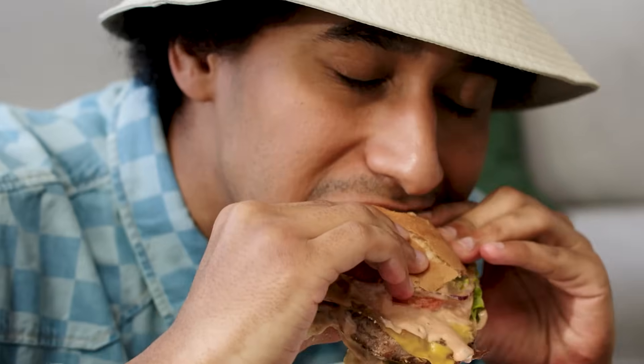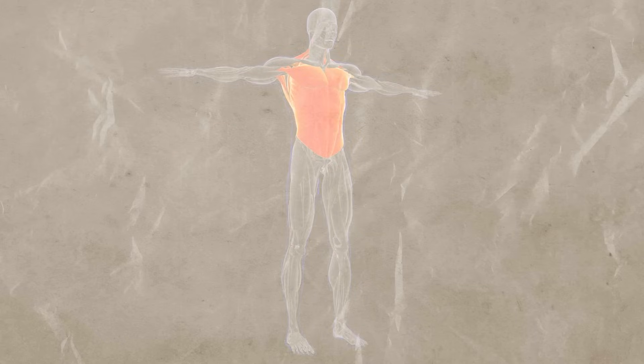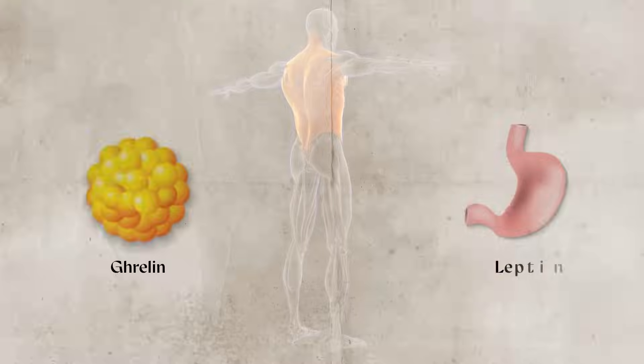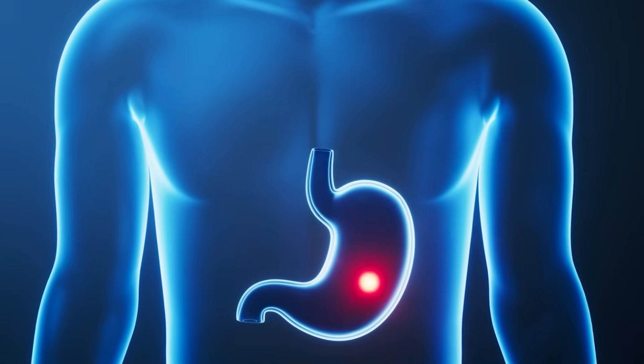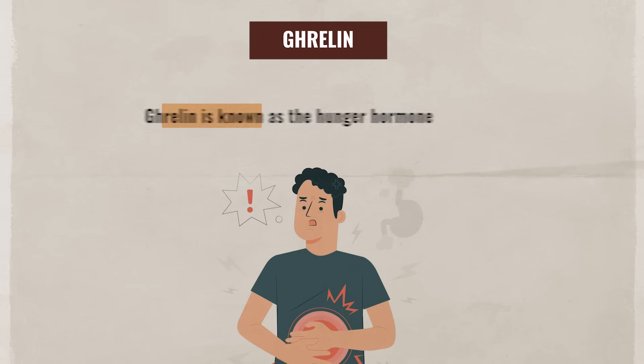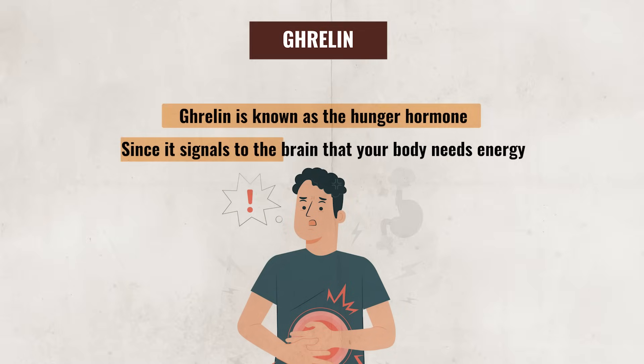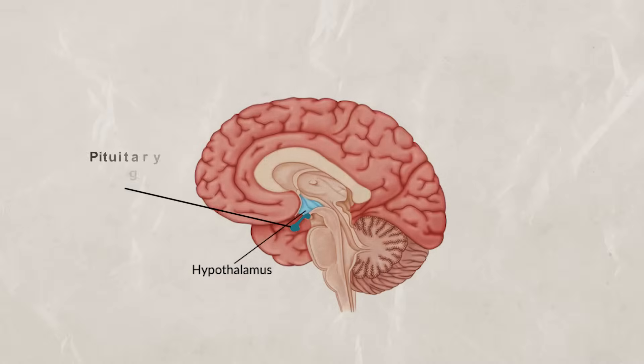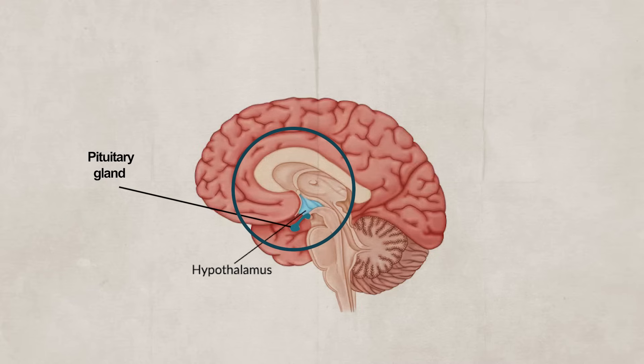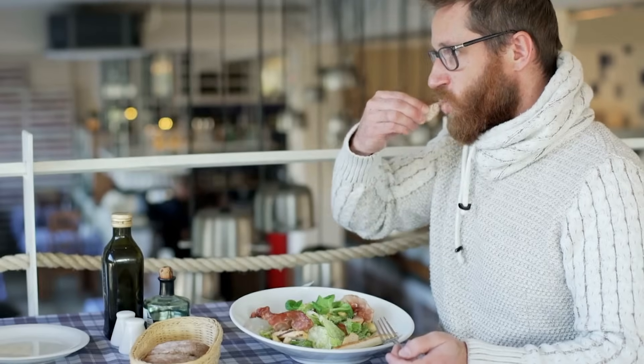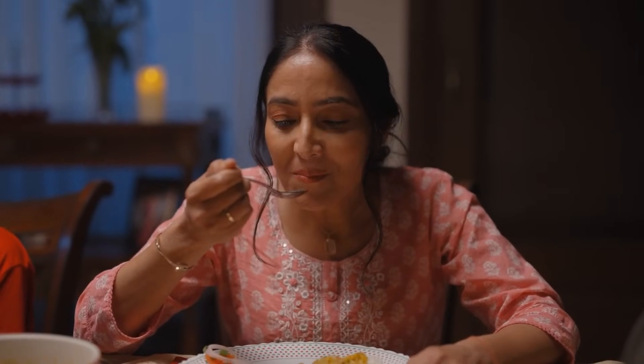Hunger and the process of eating are a great example of how our mind and body work together to drive behavior. On the physical side, our bodies rely on hormones such as ghrelin and leptin, and brain regions such as the hypothalamus, to regulate our hunger and satiety, while our thoughts, environment, and culture influence how and what we choose to eat. When your stomach is empty, your ghrelin levels will start to increase. Ghrelin is known as the hunger hormone, since it signals to the brain that your body needs energy. When your ghrelin levels rise, it stimulates the hypothalamus through the pituitary gland to increase your appetite, ultimately motivating you to eat. As you eat, your ghrelin levels will then start to decrease, reducing the desire to eat as well.